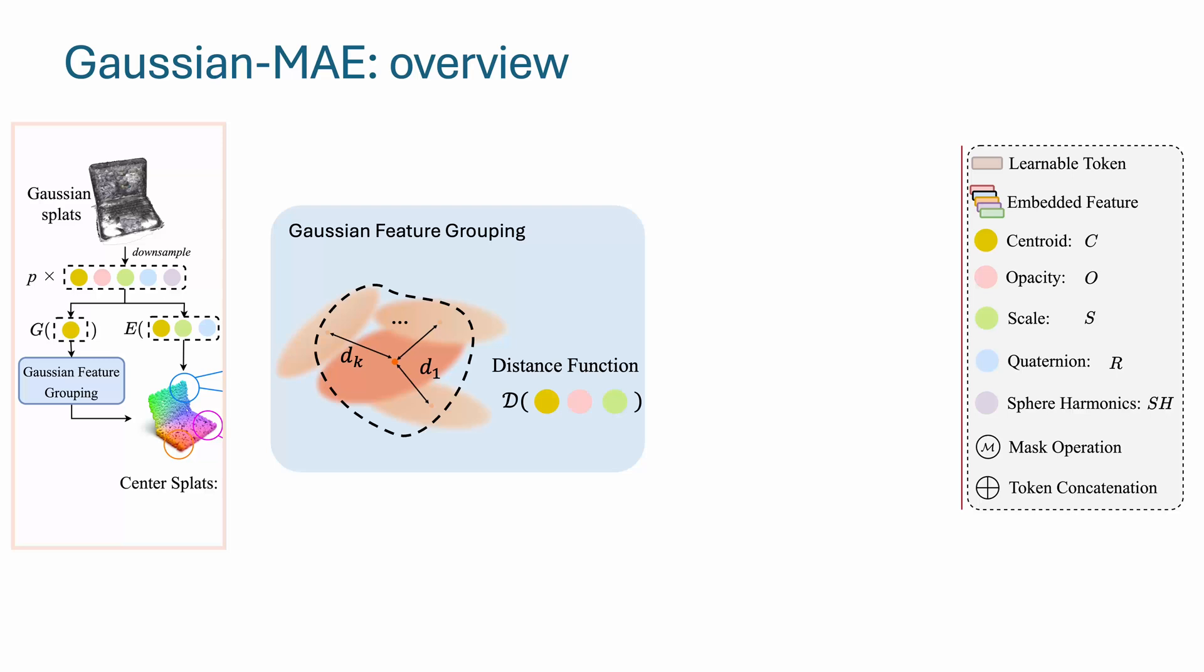We consider additional Gaussian attributes such as opacity and scale. By incorporating more attributes, we encourage that the groups are not only spatially close, but also share similar characteristics.